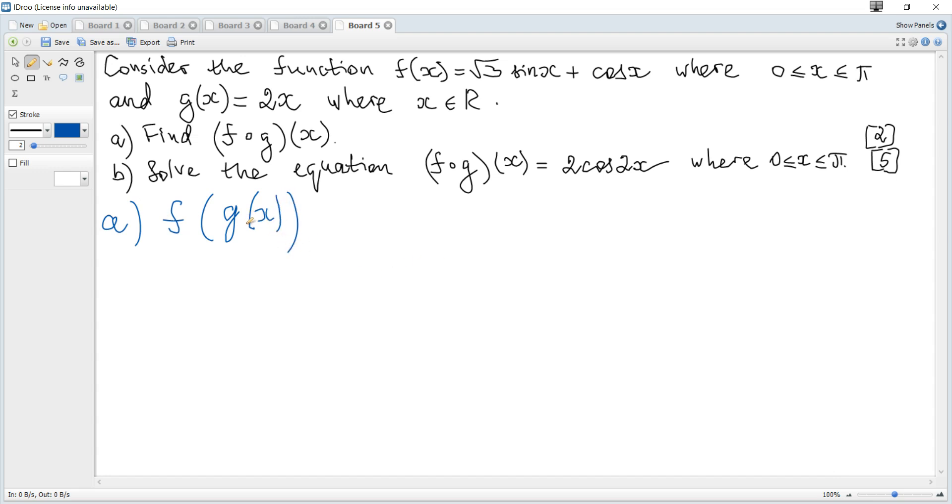We need to substitute g(x) for x into f. Hence it becomes √3sin(2x) plus cos(2x), and it's the required value of this composite function.